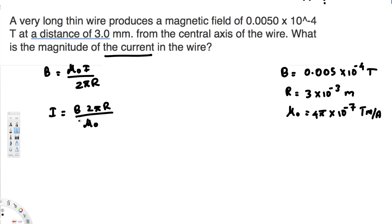Let's try to solve this one. Here we have B, that is 0.005 × 10⁻⁴ tesla, times 2π, times R, that is 3 × 10⁻³ meters, divided by...